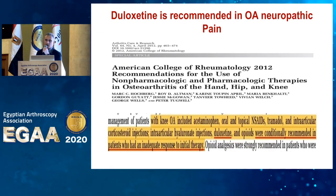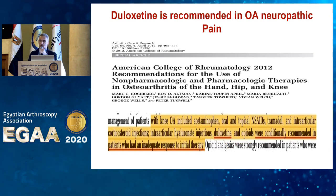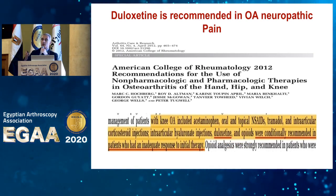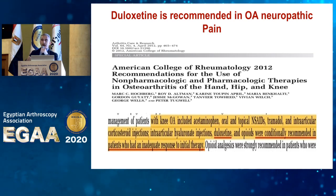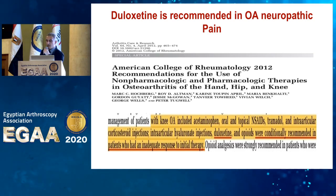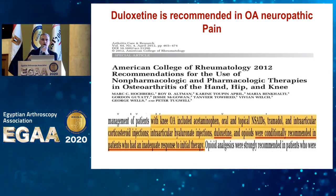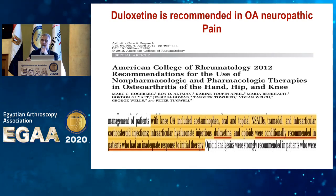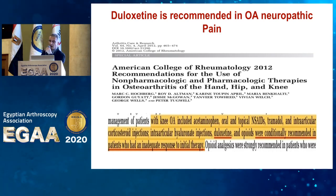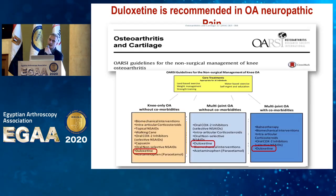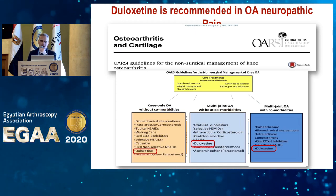This is the recommendation from the American College of Rheumatology, published around eight years ago. For some patients who are resistant to painkillers, non-steroidal anti-inflammatory drugs, and intra-articular hyaluronic acid, there is a role for duloxetine. It can be used in patients with resistant pain as a result of knee osteoarthritis, and it has been recommended by the American College of Rheumatology.